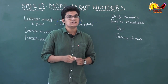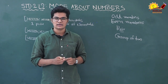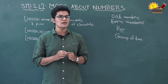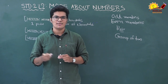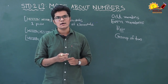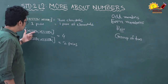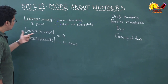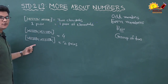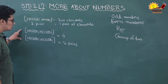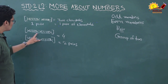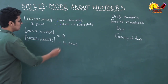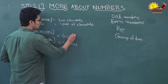So children, the number that we can write in pairs is called an even number. For example, these four chocolates — there are four chocolates here and we can divide them into two pairs. Because we can make two pairs from four, the number four is an even number.